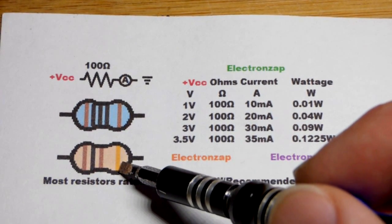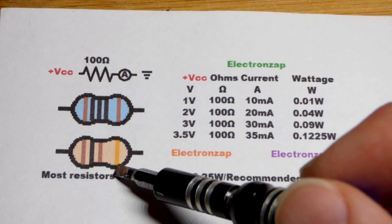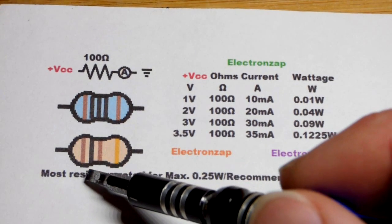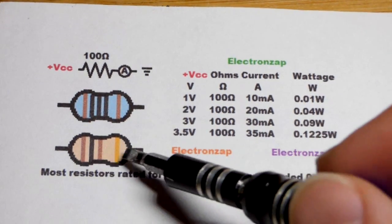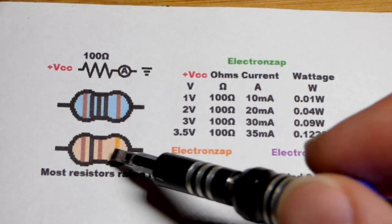Gold means 5% tolerance, so it could be expected to be 5% higher or lower. So 105 or 95 ohms might be possible.